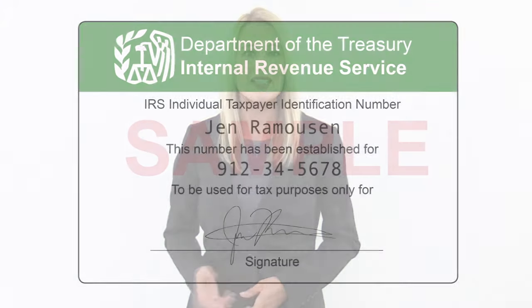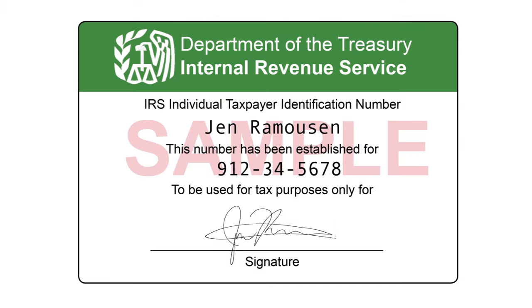It's used for administering tax laws, such as filing tax returns and opening a bank account. The TIN is either issued by the IRS or by the Social Security Administration. Taxpayer identification numbers are always a nine-digit number, beginning with the number nine, and they are formatted just like an SSN.